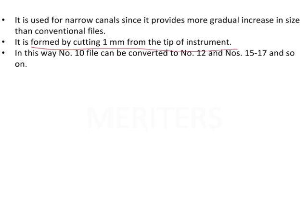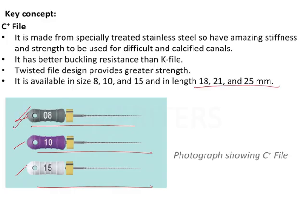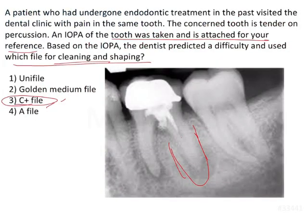These images show C plus files — number 8, number 10, and number 15 — available in lengths 18, 21, and 25 mm. Important points: better buckling resistance than K files, with amazing stiffness and strength for difficult and calcified canals. On this IOPA, the calcified canal is evident, which is why prior negotiation may have failed. For this calcified canal, EDTA as a chelating agent plus a stiff file like the C plus file should be used. The answer is option 3: C plus file.